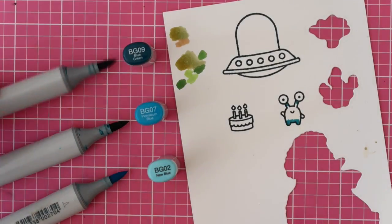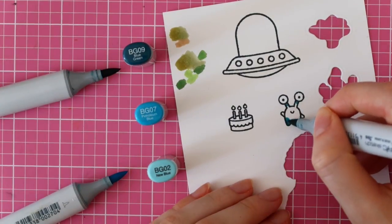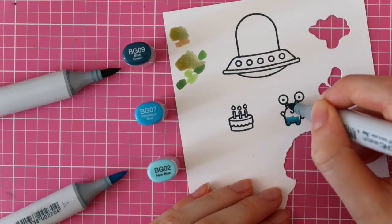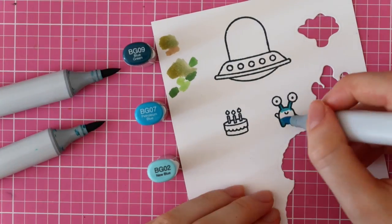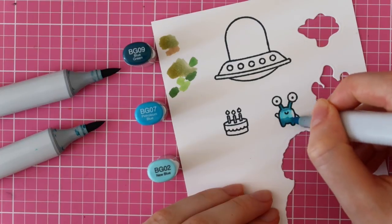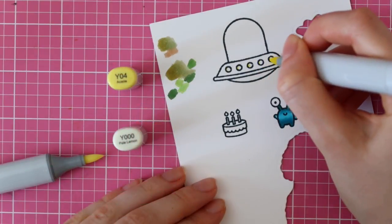For my first alien I'm using BG09, BG07 and BG02. This is just a really fun Copic color combination for a darker turquoise.